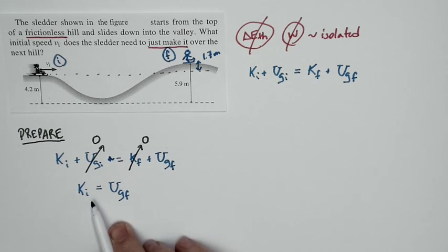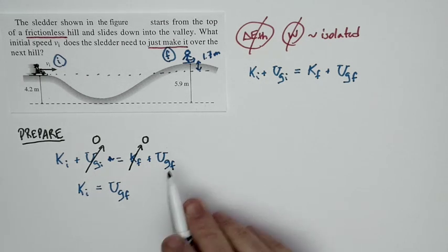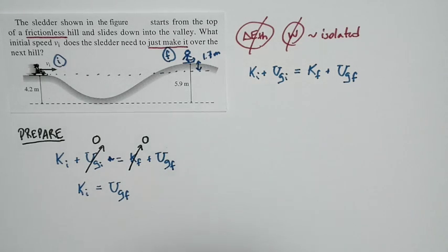How fast does the person have to be moving? Fast enough to be able to gain the potential energy corresponding to 1.7 meter rise in height. That's all we need to do.